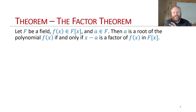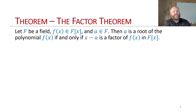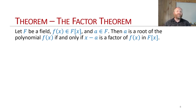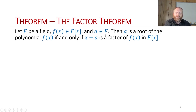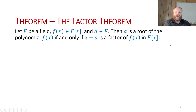We've gone from the remainder theorem to the factor theorem. When we talk about divisibility, we're talking about if something is a factor of something else. Using the division algorithm, if we divide by x minus a and a happens to be a root, the remainder is zero. This tells us f is going to have a factor of x minus a. So: let f be a field, f(x) an element of f[x], and a an element of f. Then a is a root of f(x) if and only if x minus a is a factor of f(x).